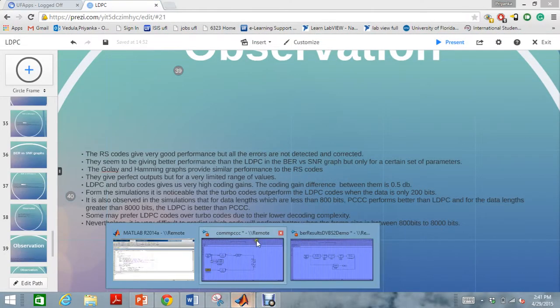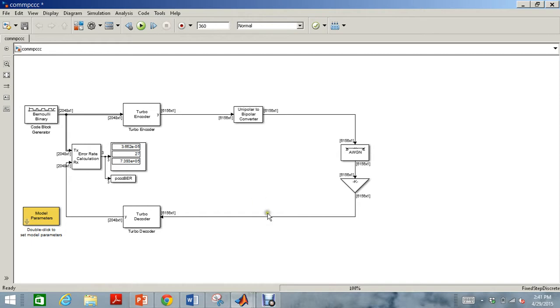The simulation was done using Simulink and this was the model which was created for the turbo codes. As you can see, if I run it, I will get three values. The first one is my BER. This BER is going to the command window from where it goes to the code where it is used for creating the SNR versus the BER graph.